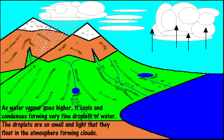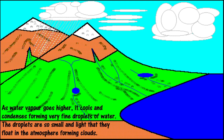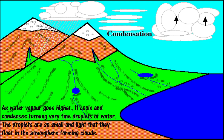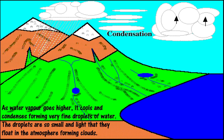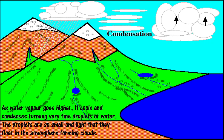As water vapor goes higher, it cools and condenses, forming very fine droplets of water. The droplets are so small and light that they float in the atmosphere, forming clouds.